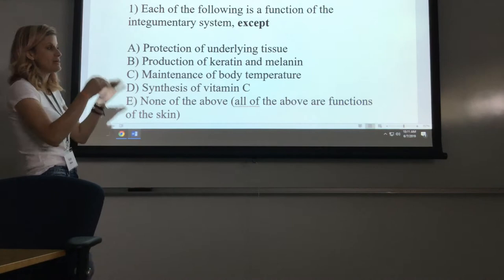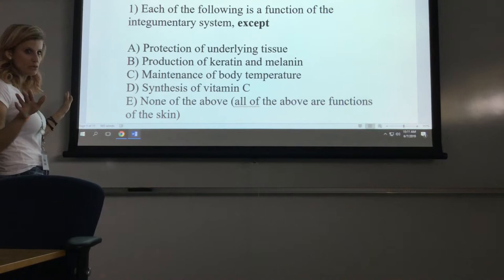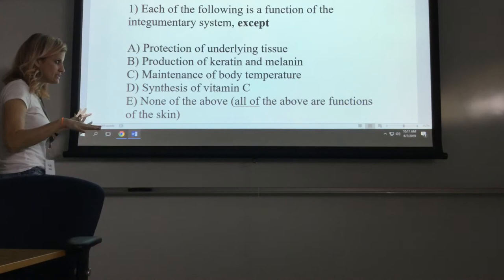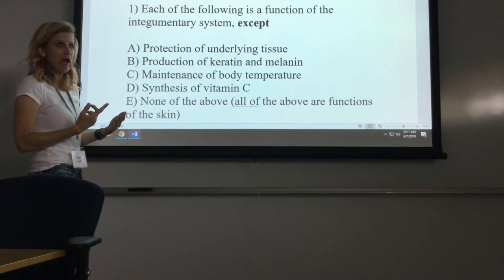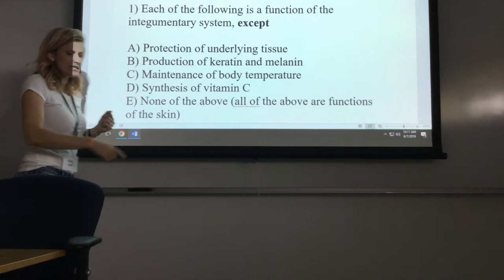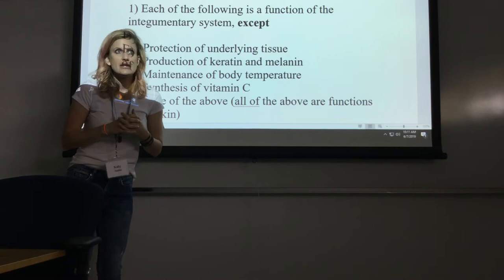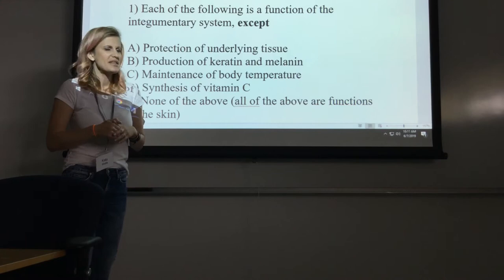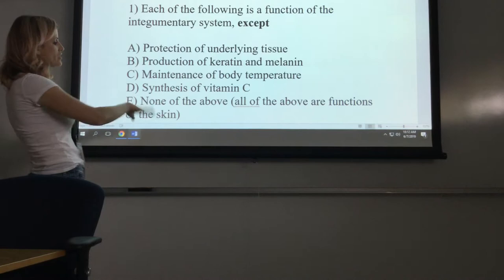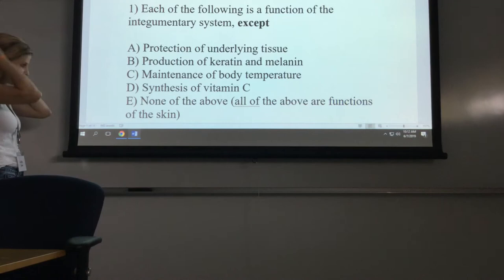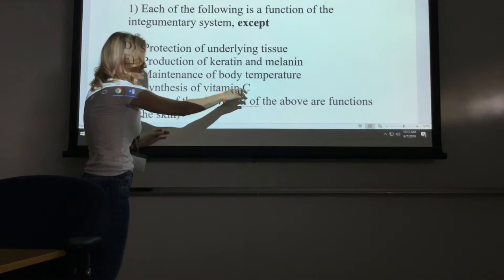All of these are functions of the integumentary system except: protection of underlying tissue — that's absolutely one of the functions. Production of keratin and melanin — the skin does that. Maintenance of body temperature — the skin does that; it sweats to cool the body down. Synthesis of vitamin C? That does not make sense. Vitamin C is important for collagen synthesis, so it's related to the skin, but the integumentary system does not produce vitamin C. So the answer is D.